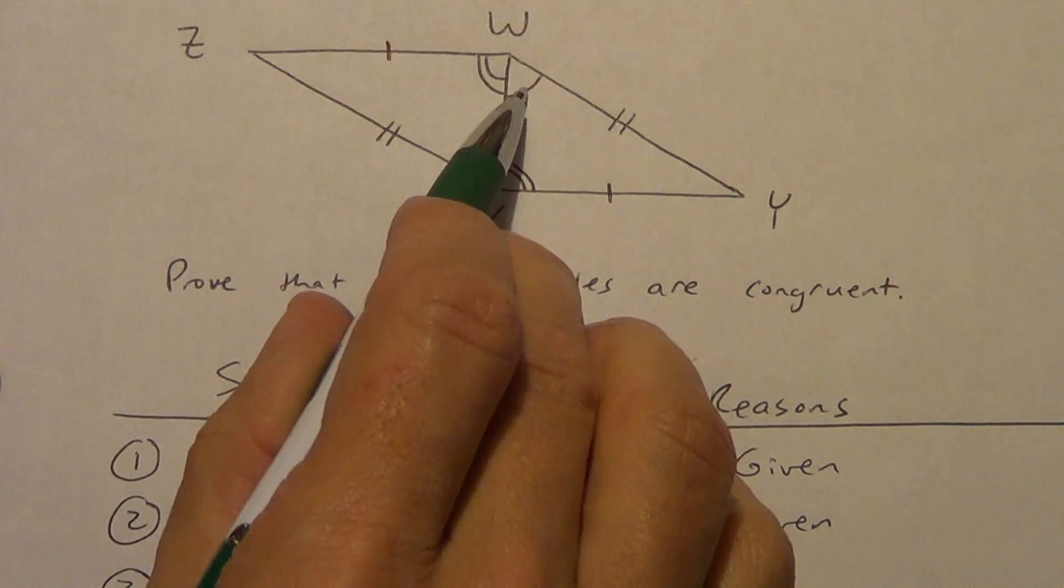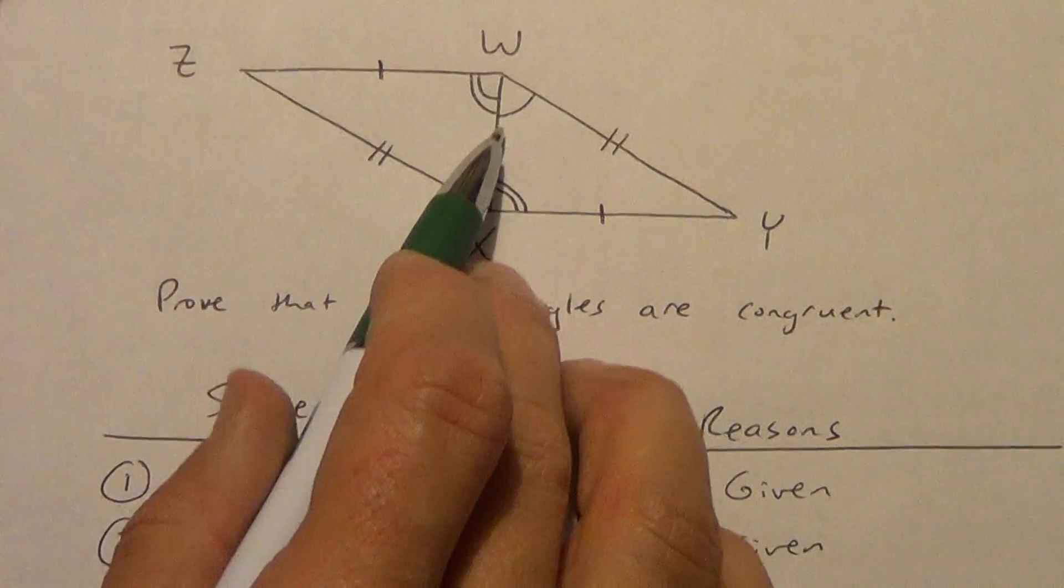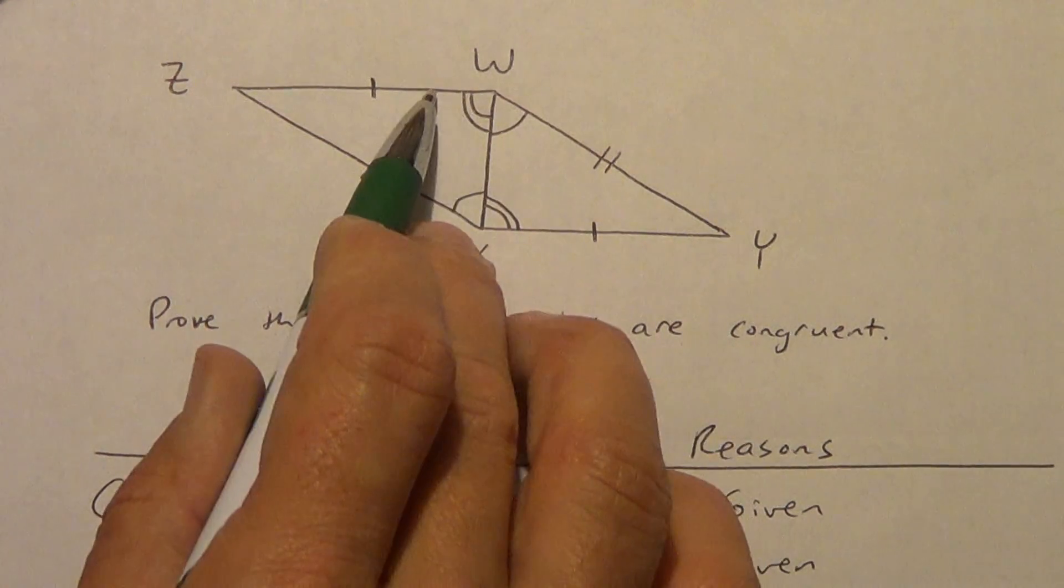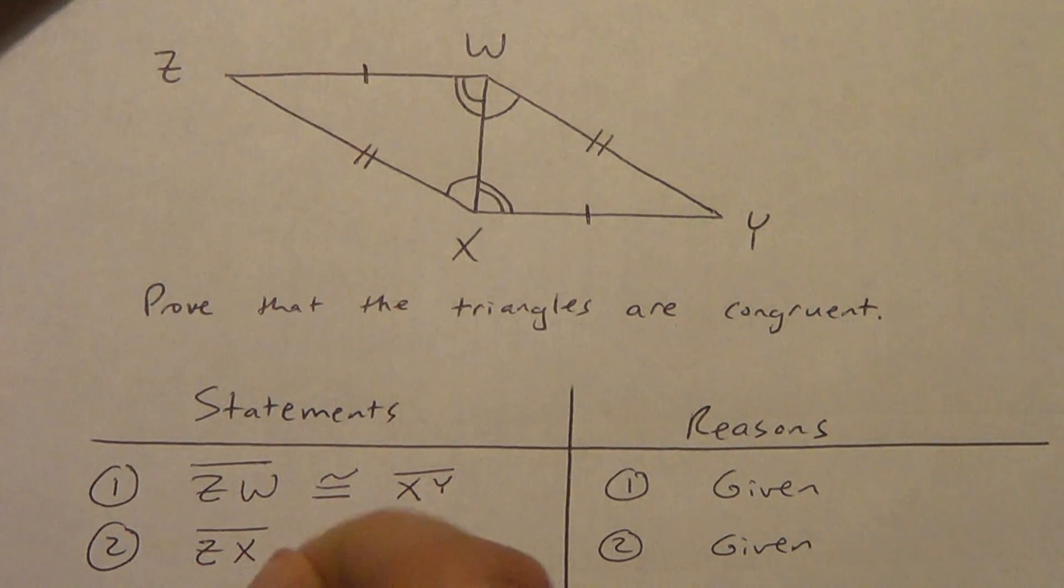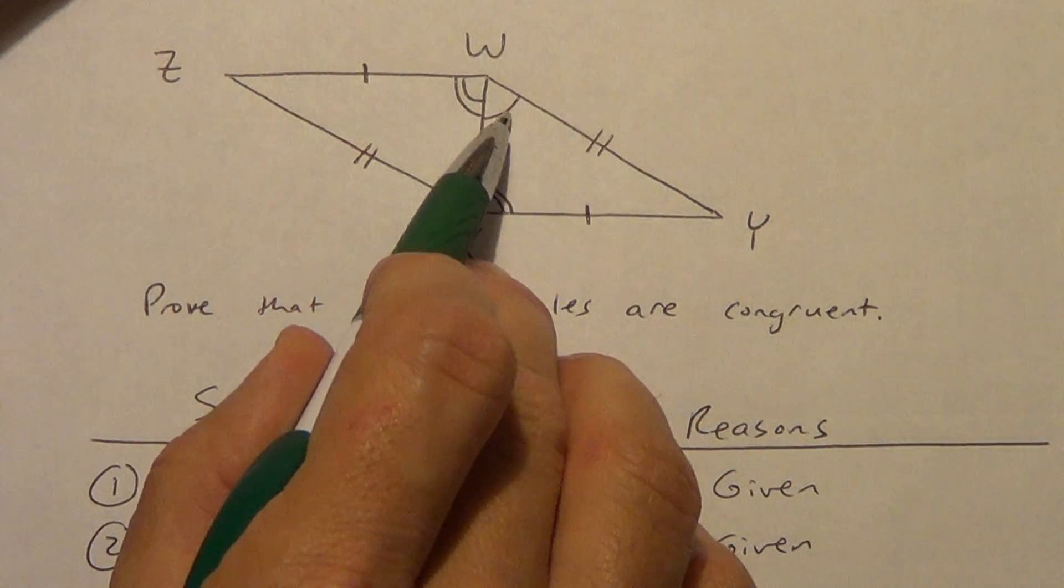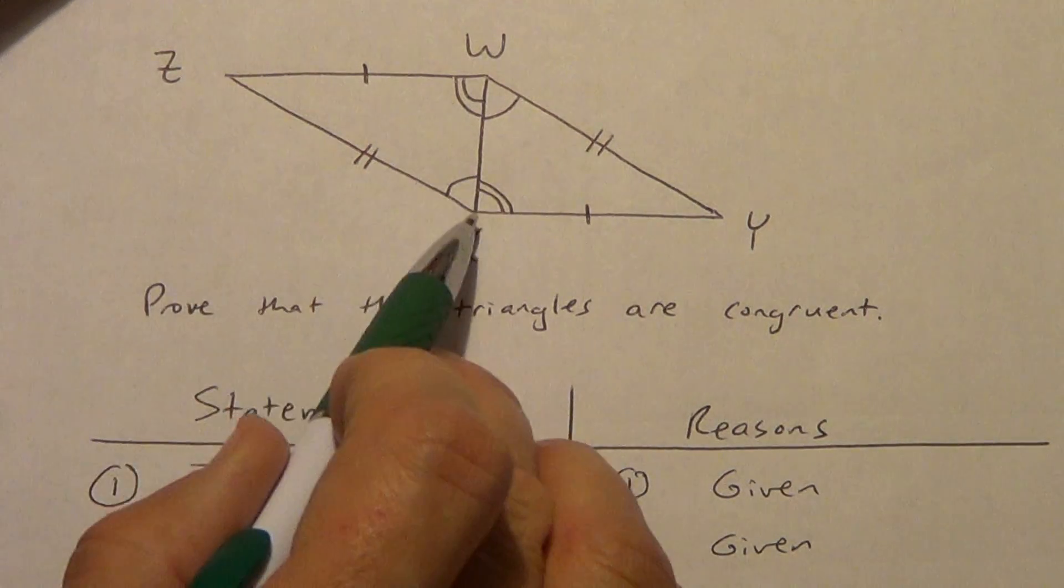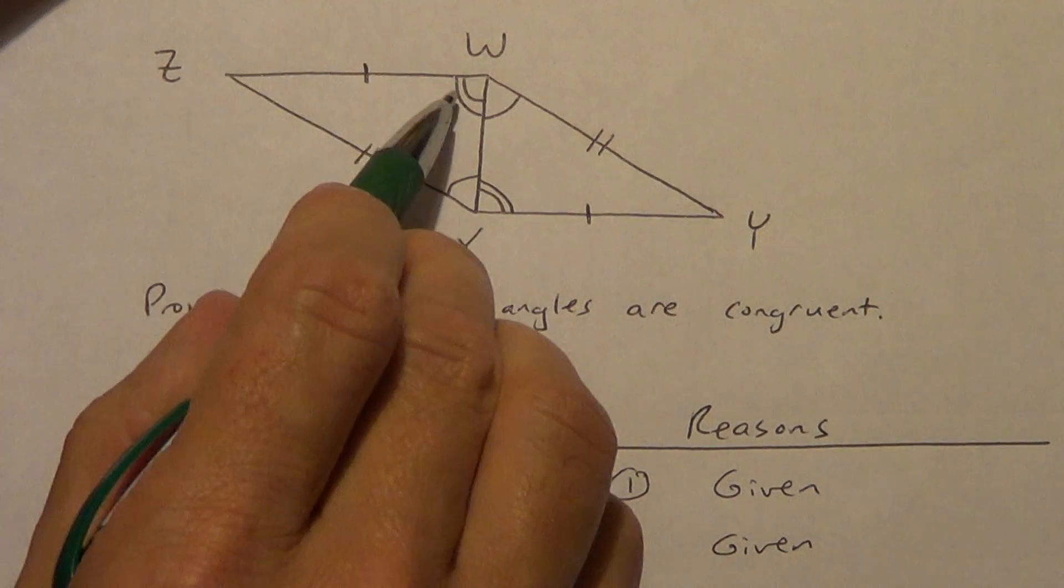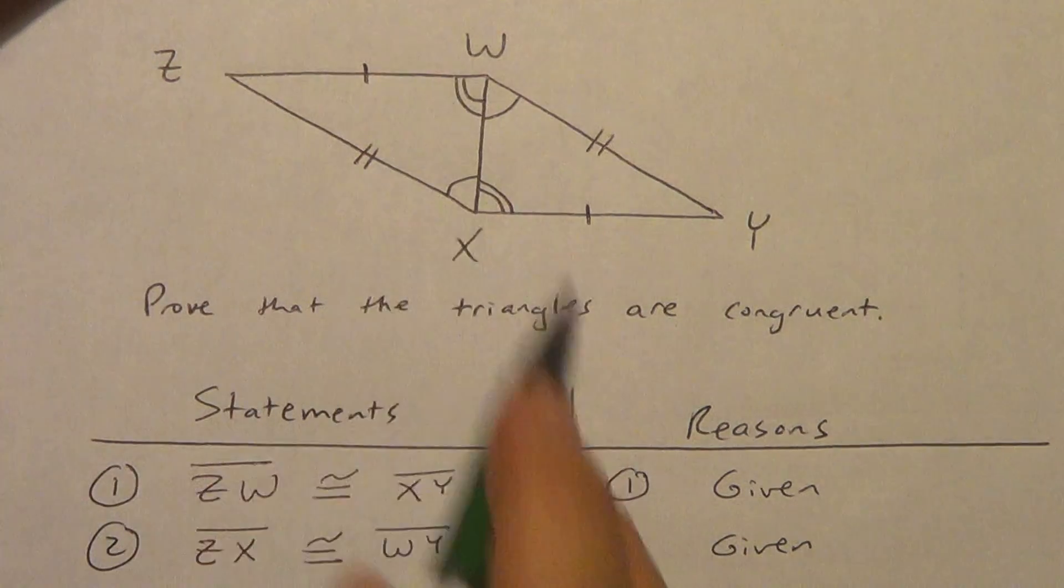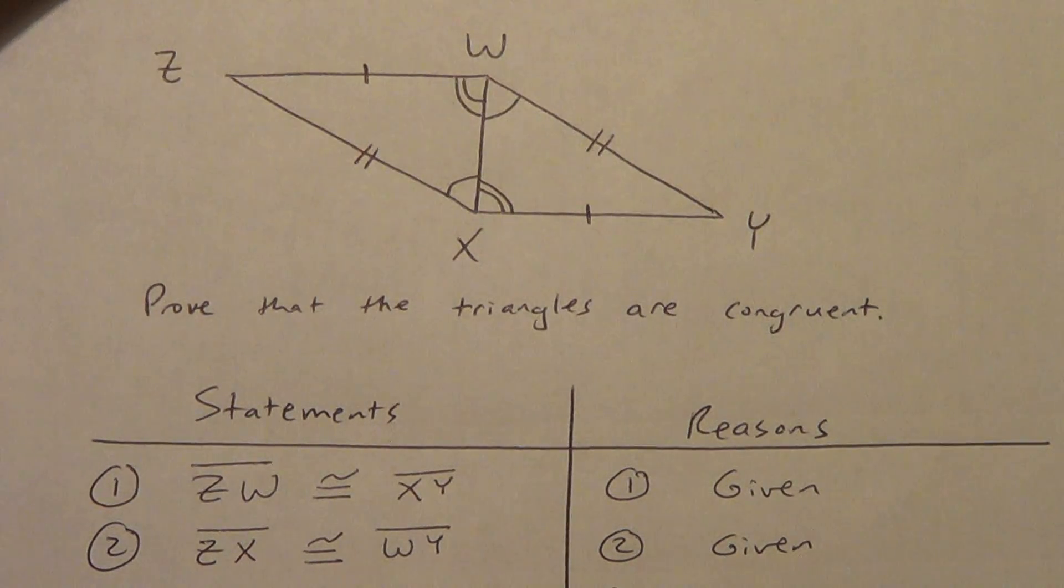What else do we know? Well, we know this angle is congruent to that angle. Now, I can't just say angle W because that's confusing. There's a bunch. There's this angle W. There's that angle W. There's this really big angle W. So remember, we have to use three letters. So angle YWX. YWX. That's this one up here. Is congruent to this one down here. ZXW. Congruent to angle ZXW. Once again, that's a given because of the marks. And this angle, angle ZWX, is congruent to angle YXW.